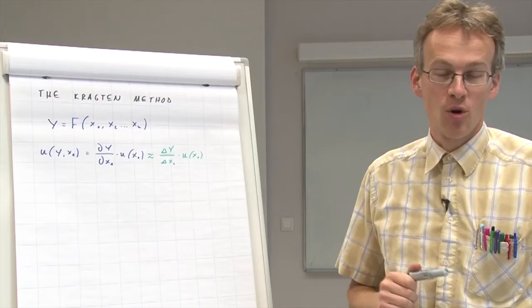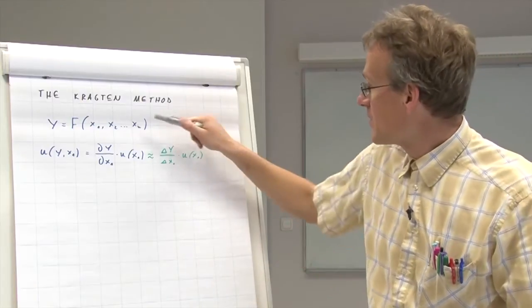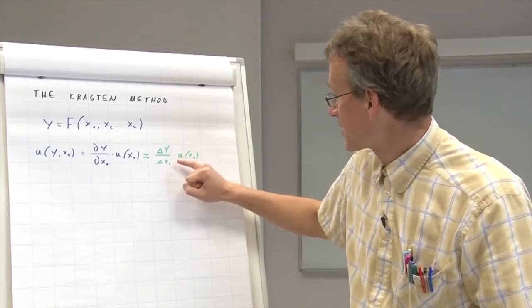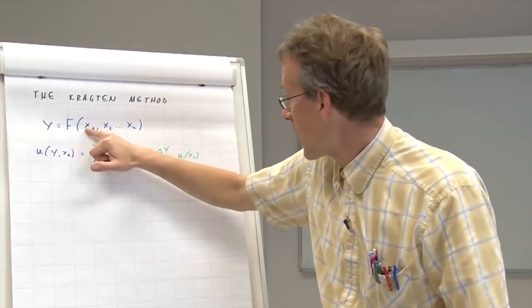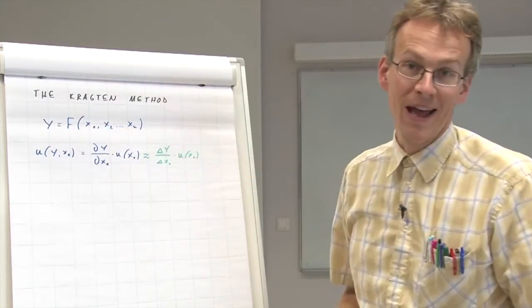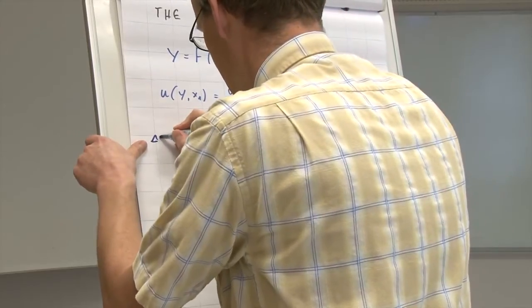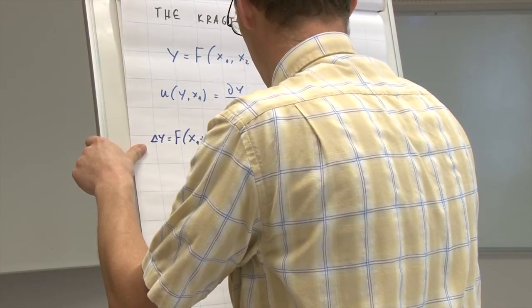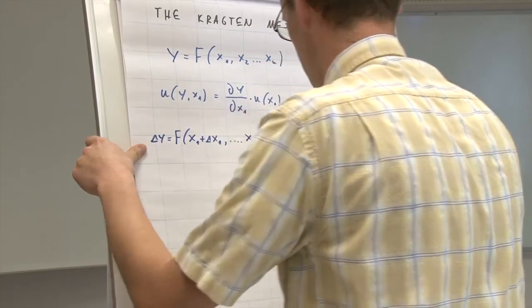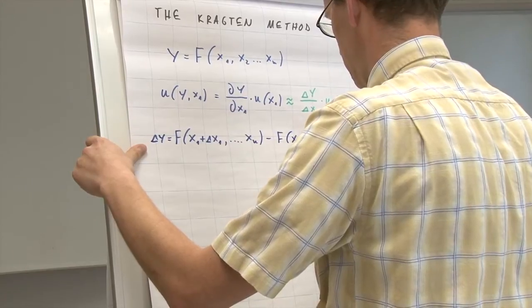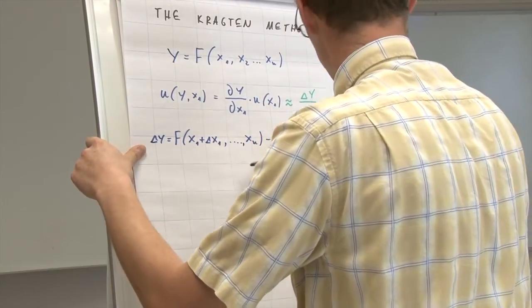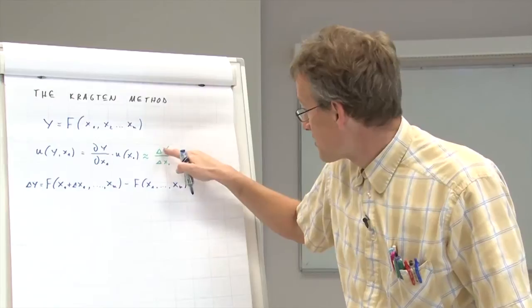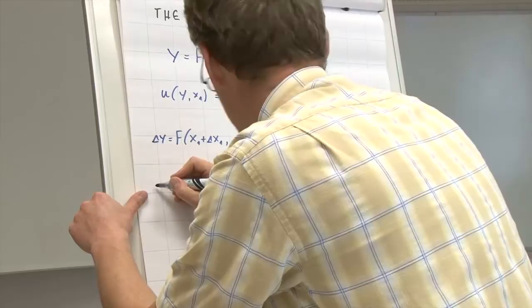Now with delta x1 all is clear, but how would we find delta y? For this we have to look at this function again, and it is obvious that we have to subtract from the function found at position x1 plus delta x1 the function as it stands here, whereby x1 has not been modified. So delta y is calculated as follows, so that we subtract just like this.